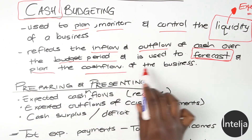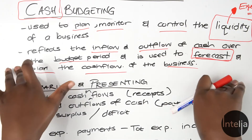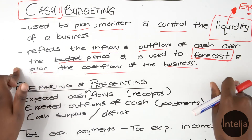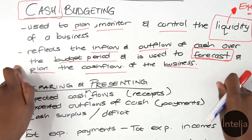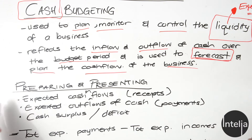Just like the normal budgets we were talking about in the last two videos, it's for prediction of inflow and outflow of funds in general. But in the cash budget, we only focus on the predicted inflow and outflow of cash only.